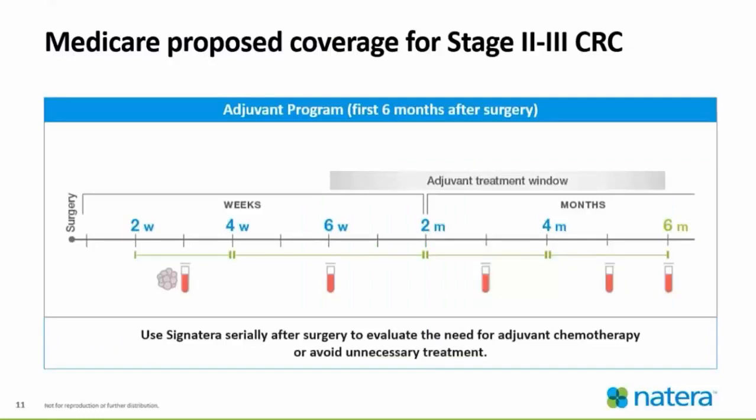The Medicare proposed coverage timeline for stage two to three colorectal cancer shows the adjuvant program consists of six months after surgery, with the initial test drawn about three weeks after surgery. Signatera is serially used after surgery to evaluate the need for adjuvant chemotherapy or to avoid unnecessary treatment. There are four blood drawings done in the adjuvant setting: the initial one at three weeks, then subsequent draws at six weeks, roughly three months, five months, and again at six months.